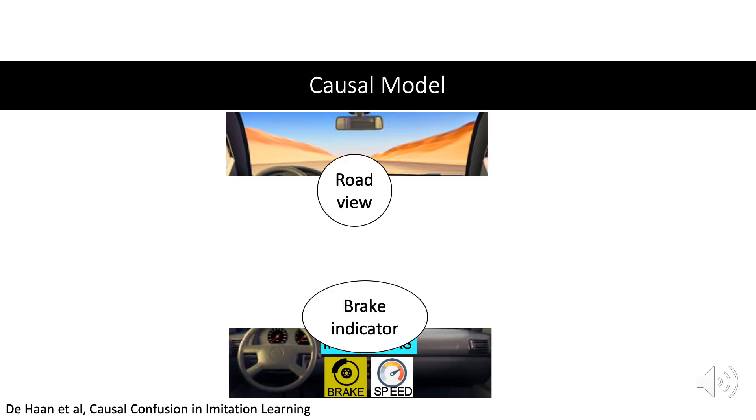The reason this happened is because the imitator used the wrong causal model of the road. Simplified, we have two random variables, the road view and the brake indicator, and want to predict the expert's action. We know the expert only considers the road view. This is the only cause. The brake indicator is ignored by the expert and is a nuisance variable.